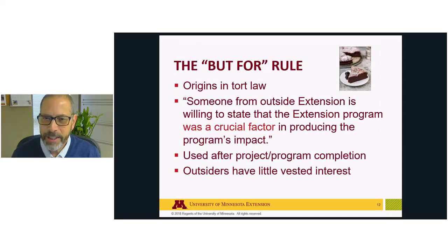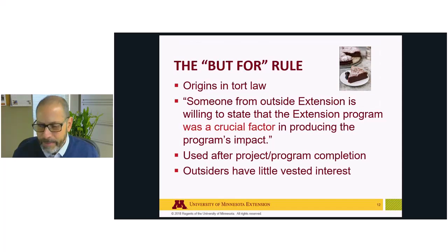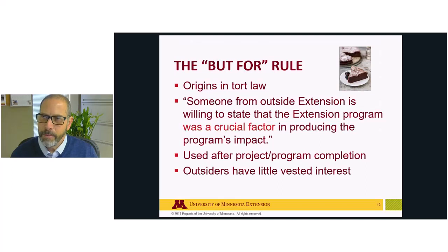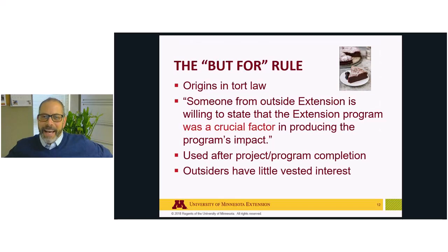The BUT FOR rule comes from tort law — it's called proximal cause. In a tort case, you have to show that a defendant probably caused a financial harm to someone else, and the BUT FOR rule asks: would this harm have happened if not for the actions of the defendant? The way this gets interpreted for our use is: someone from outside Extension is willing to state that the Extension program was a crucial factor in producing the program's impact.